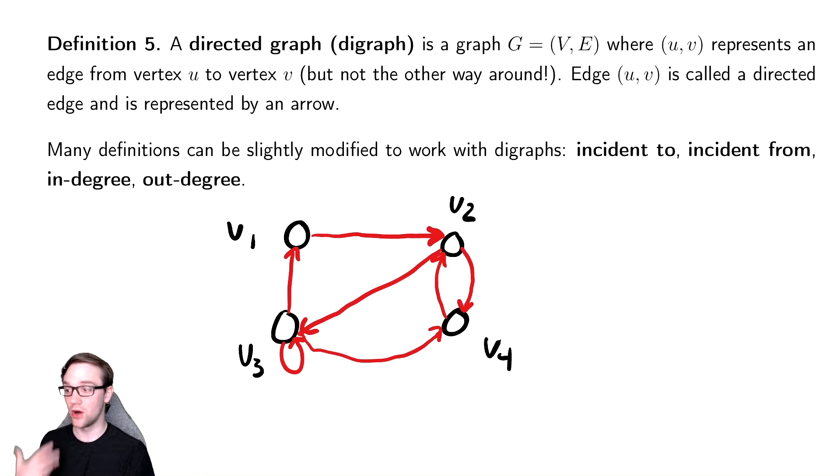And incident to and incident from are exactly what you might expect. The edge here that goes V3 to V1 is incident from V3 and incident to V1.